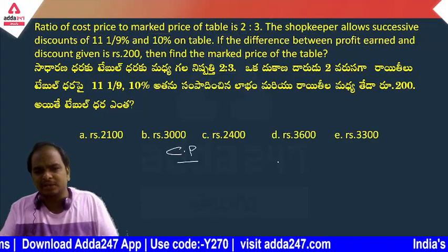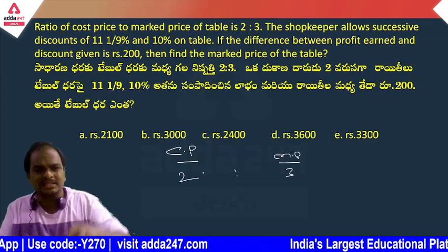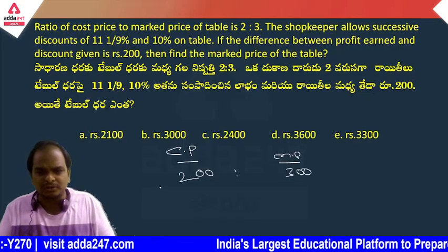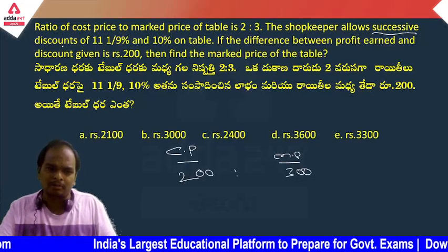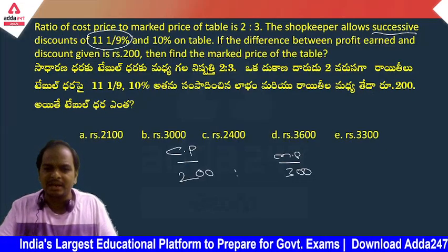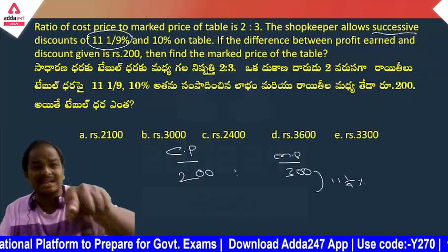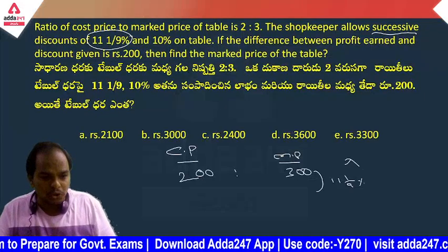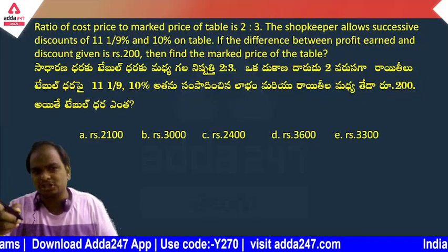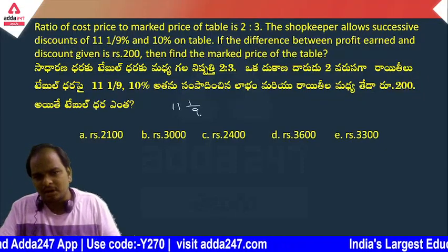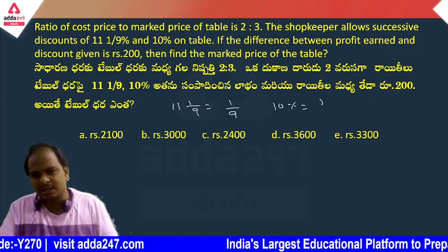Cost price to market price ratio is 2:3, so let cost price be 200 and market price be 300. Now apply discounts. The market price has 11 1/9 percentage — that is 1/9 — and the next discount is 10%, whose fraction value is 1/10.